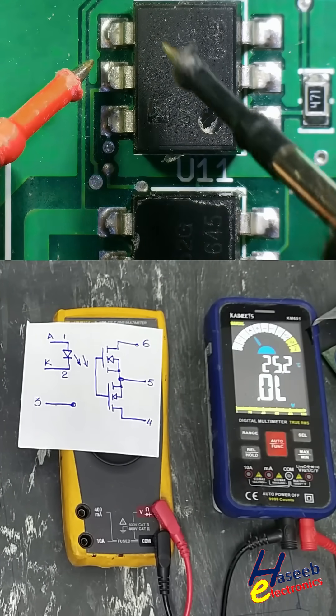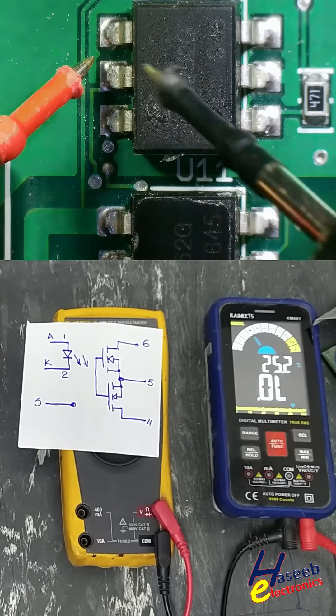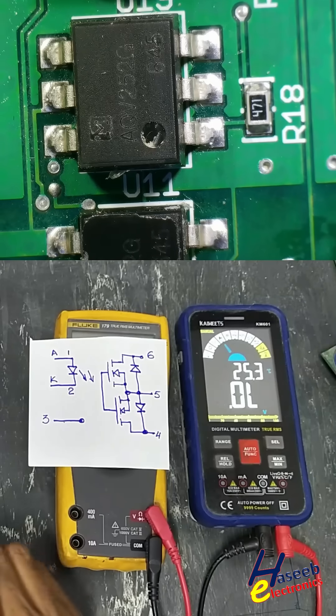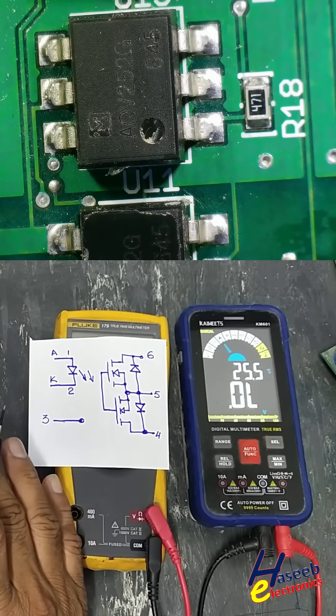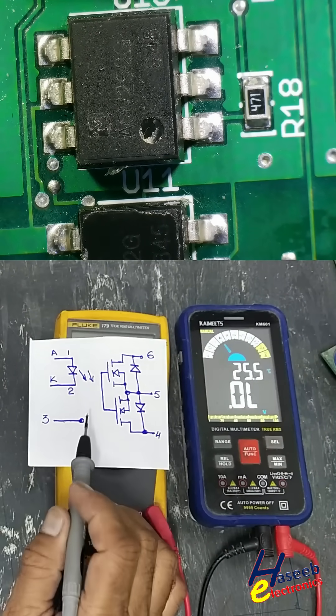There are two MOSFETs on the output side. It has a rating of 2.5 ampere and 60 volt.